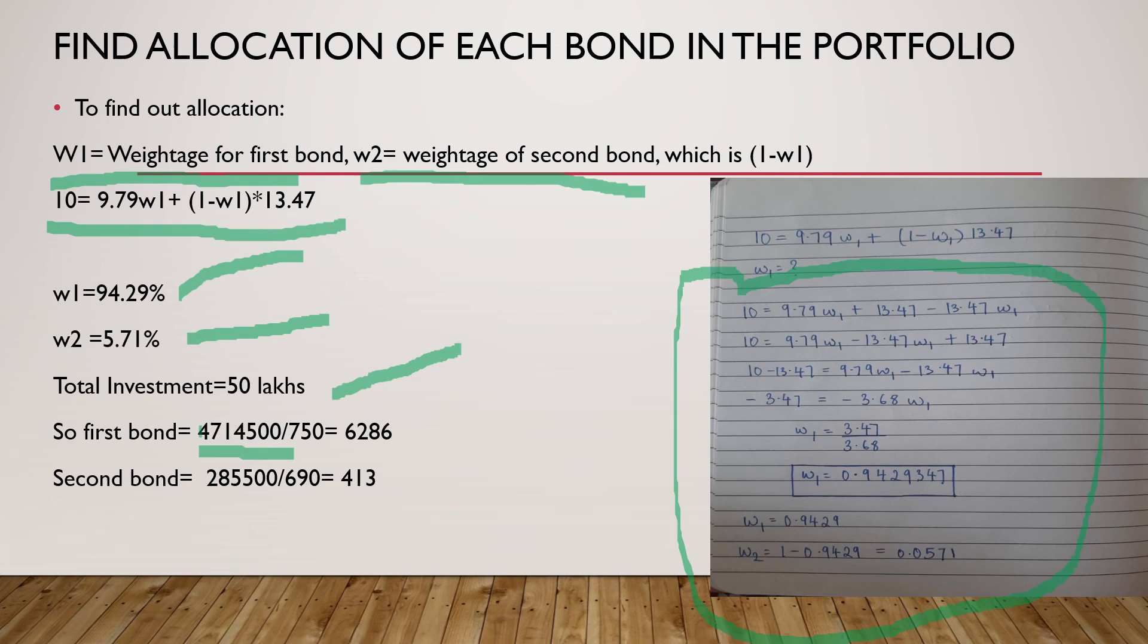And the second one will be for the remaining value which is 2 lakhs 85,500, that would be divided by 690. Now one thing that you have to remember is that we have rounded off the numbers. In the Excel you need not round off the numbers. Please do calculate and consider all the decimal values rather than just two fractions because that will give you appropriate answer.